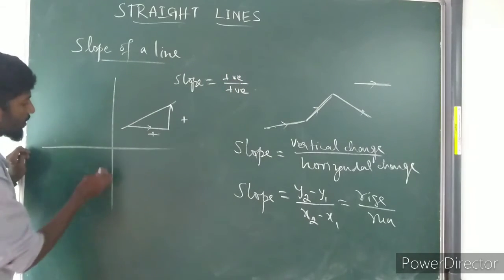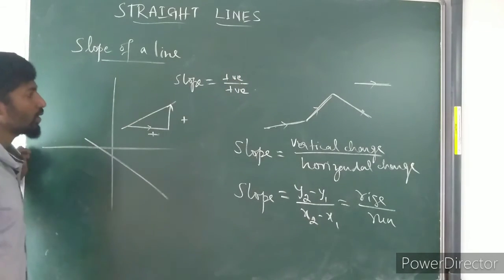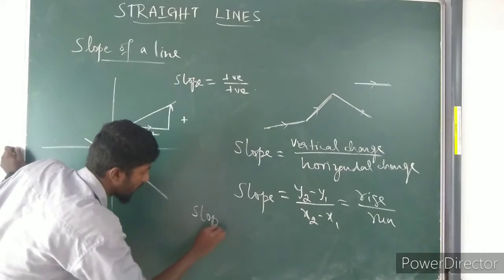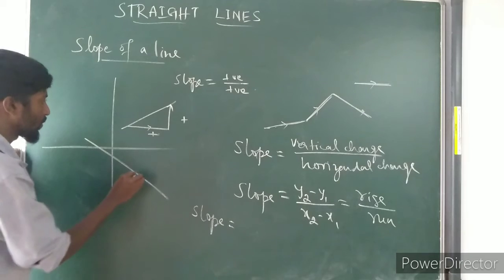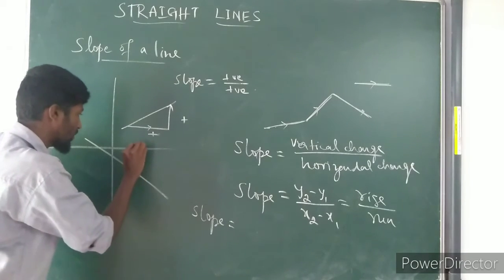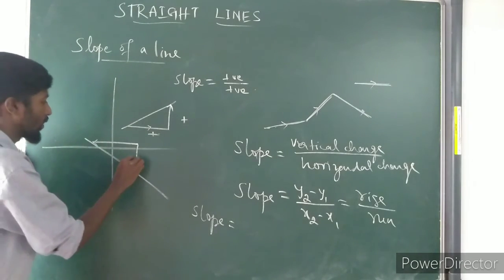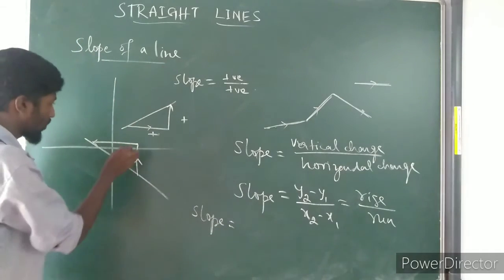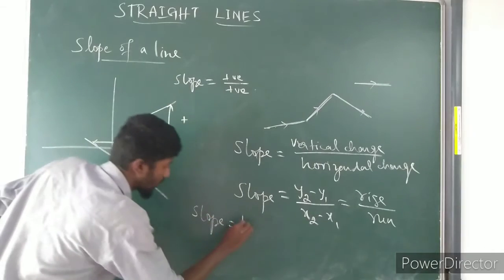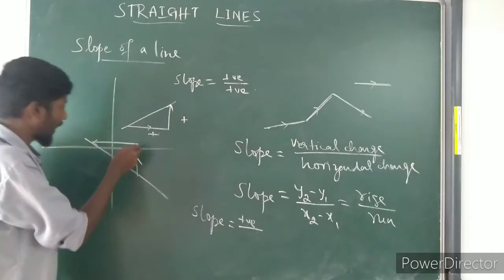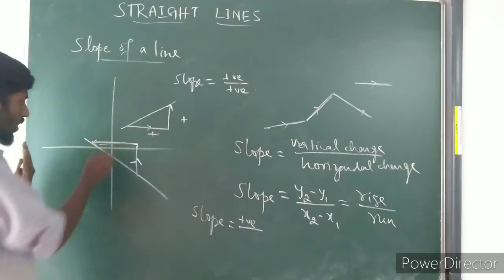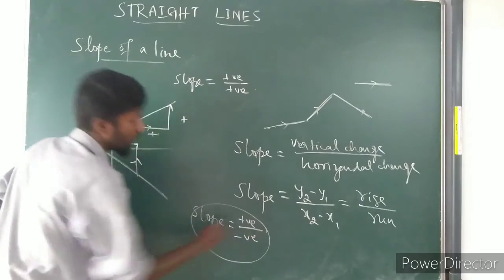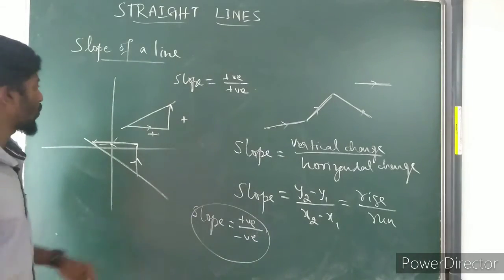Suppose if I take a line like this. For this line, slope equals rise over run. The upward direction is positive, so the rise is positive. But the run is going towards the left-hand side, which is negative. So in this case, slope will be a negative value.